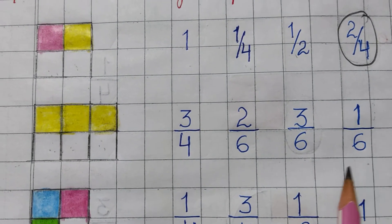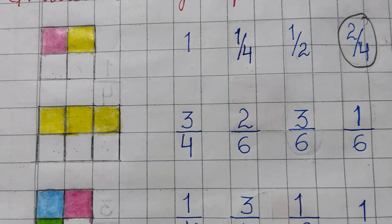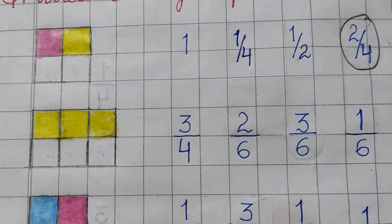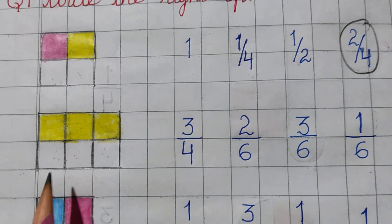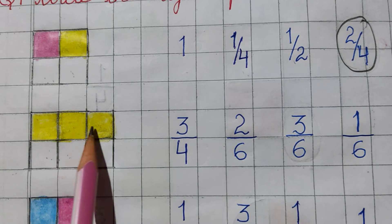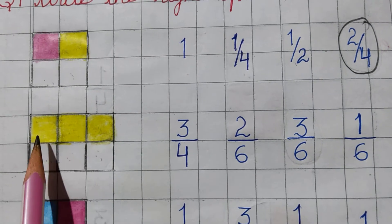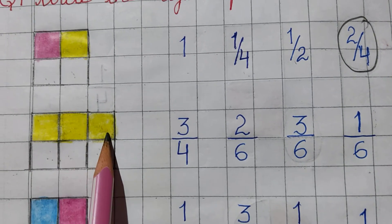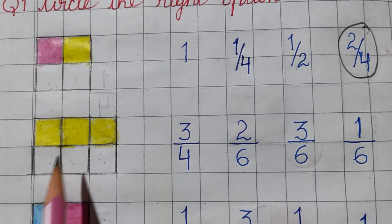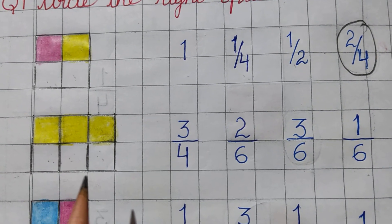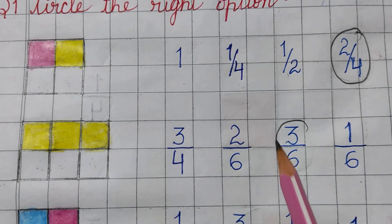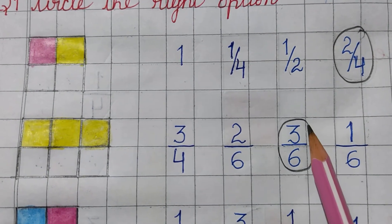Now we have to find out the numerator — the upper part. How many have been colored? One, two, three — three parts have been colored, so the numerator is three. So three upon six is the answer.